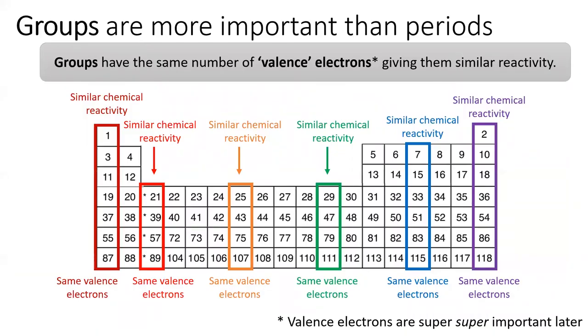Before we end, I want to re-emphasize the importance of groups on the periodic table. Each group of the table has similar chemical reactivity because it has the same number of valence electrons. This is one of the most important concepts of the class.